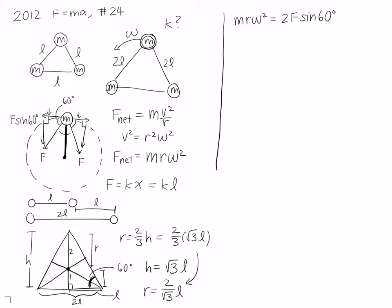Now if we plug what we know into our equation, namely F and r, we find that m times r, which is 2 over the square root of 3 times L, times omega squared, is equal to 2 times F, which is kL, times sine of 60 degrees, which is root 3 over 2. And now we want to solve for k.